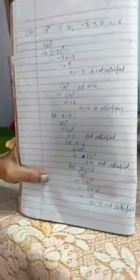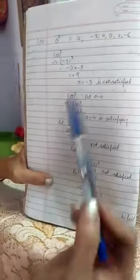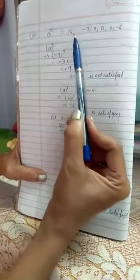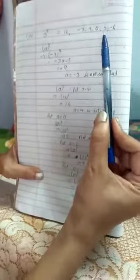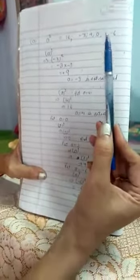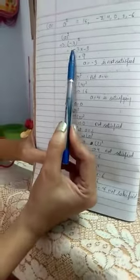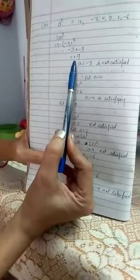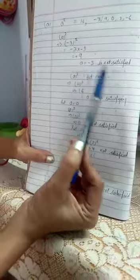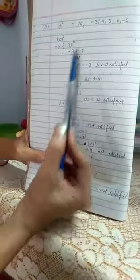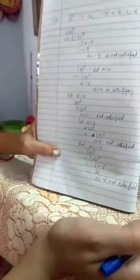I am taking question 1 from your exercise 7.1. The question is a square equals 16, and we need to check which values satisfy this. First we take minus 3: minus 3 whole square equals minus 3 into minus 3 equals plus 9. So a equals minus 3 is not satisfied.